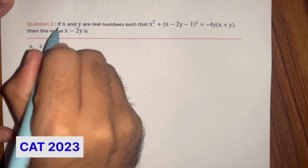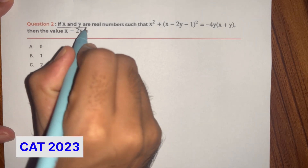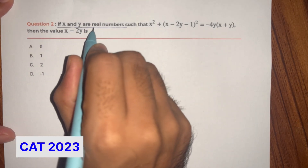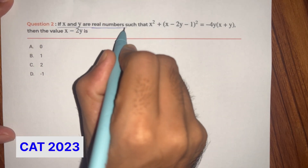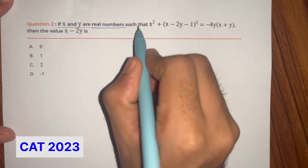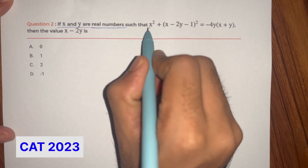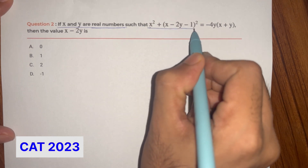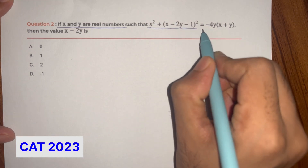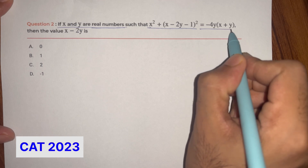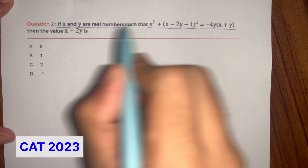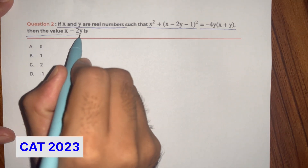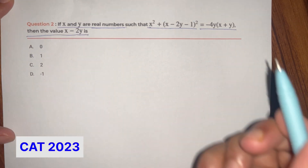What is the question I have given? If x and y are real numbers — this is an important point — such that x squared plus (x minus 2y minus y) the whole square is equal to minus y into (x plus y), then the value of x minus 2y is what?